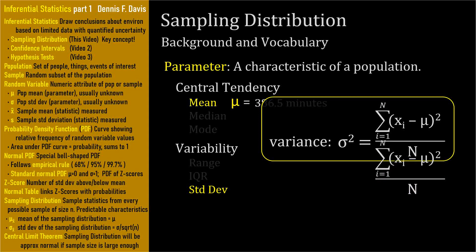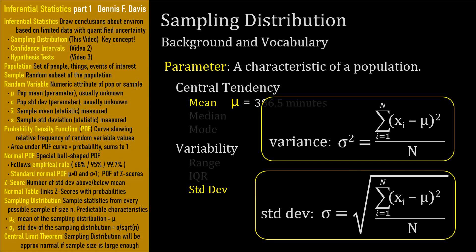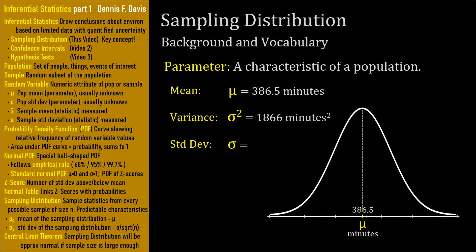Since that's kind of awkward, we take the positive square root of the variance to get the units back to the same unit as the random variable. The square root of the variance is called the standard deviation. The standard deviation of a population's random variable has the symbol lowercase sigma. So here are the parameters of our battery population: mu is 386.5 minutes, variance is 1866 minutes squared, and the standard deviation is the square root of 1866 minutes squared, which is about 43.2 minutes.